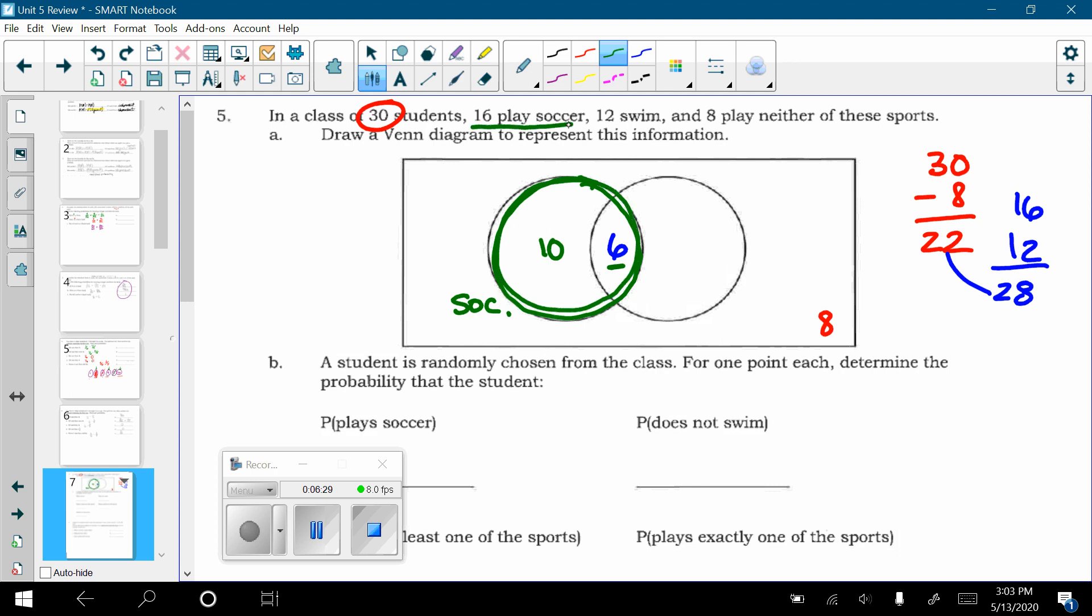This whole circle has to add up to 16 people. 10 plus 6 is 16. Over here, these are my swimmers. It said I have 12 people who swim. Within this circle, I already have accounted for 6 people. So, there's another 6 here to make a total of 12. To check my work, I would add 10 plus 6 plus 6 plus 8. So, this is 12 plus 8 is 20 plus 10 is 30. And that checks with my total. So, I know I have the right diagram.